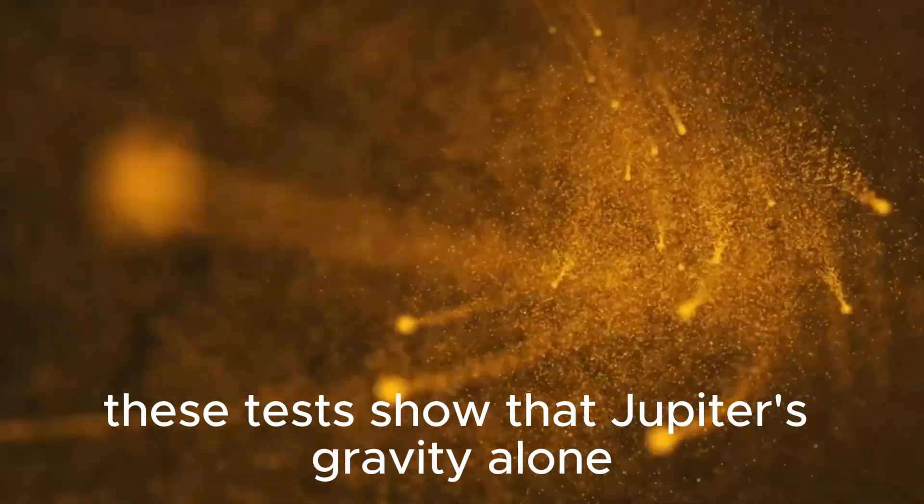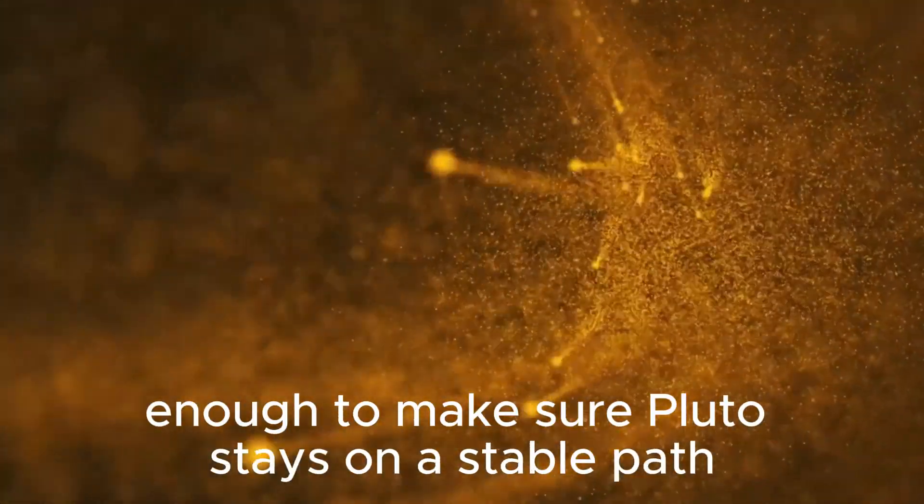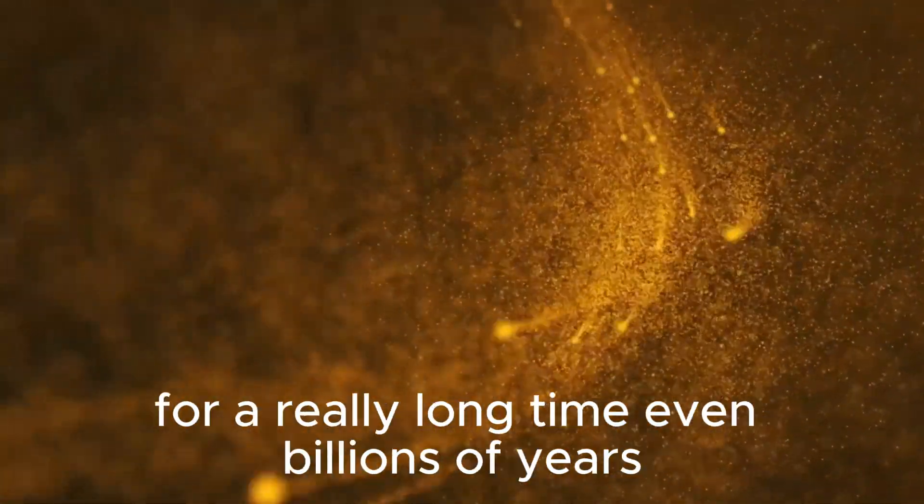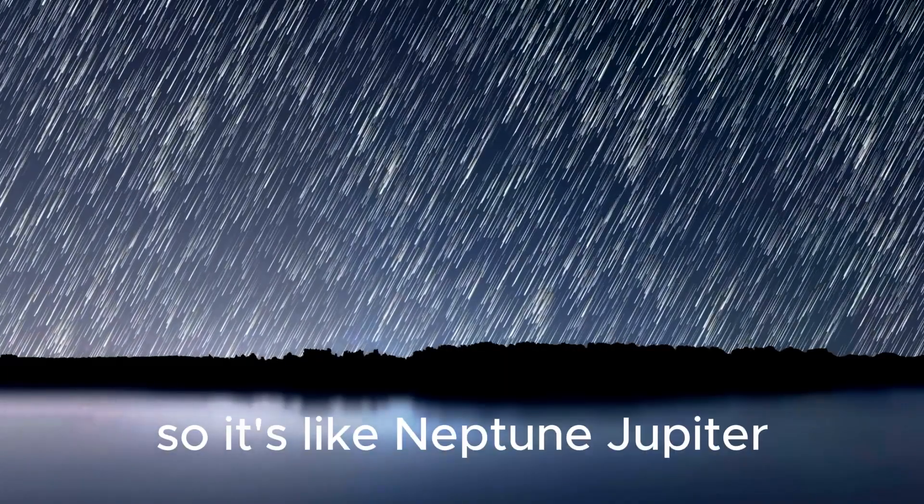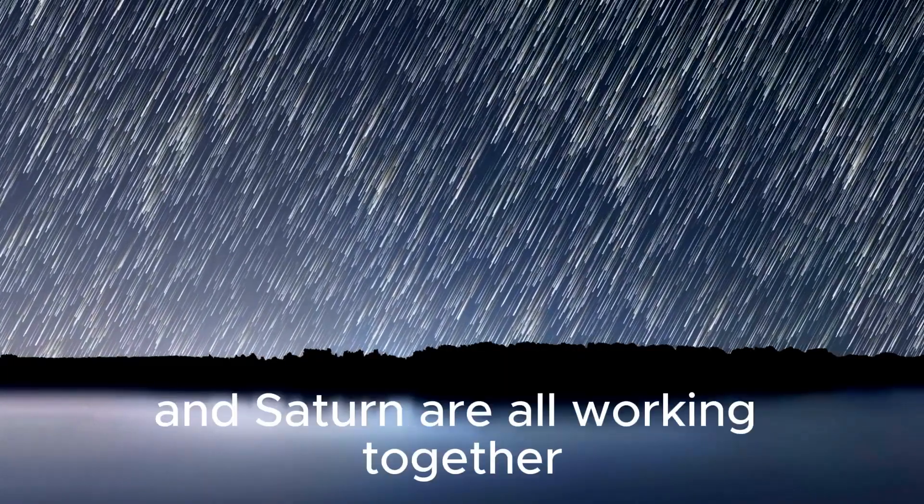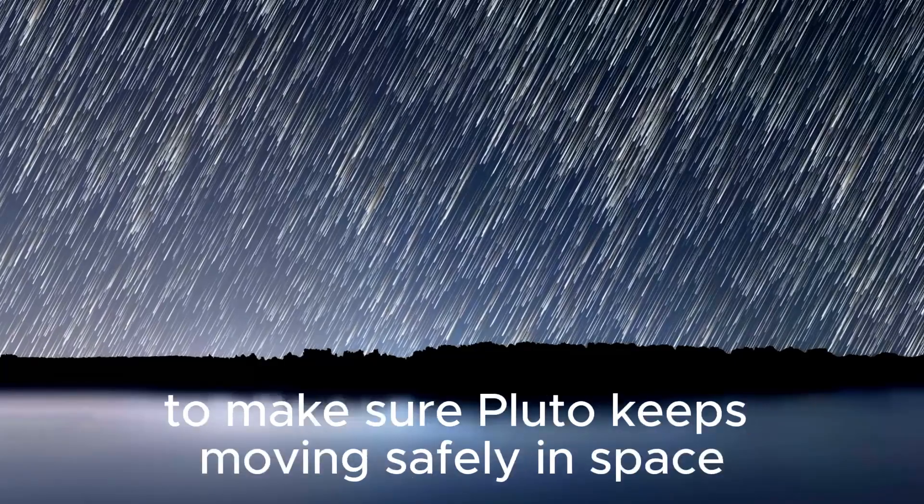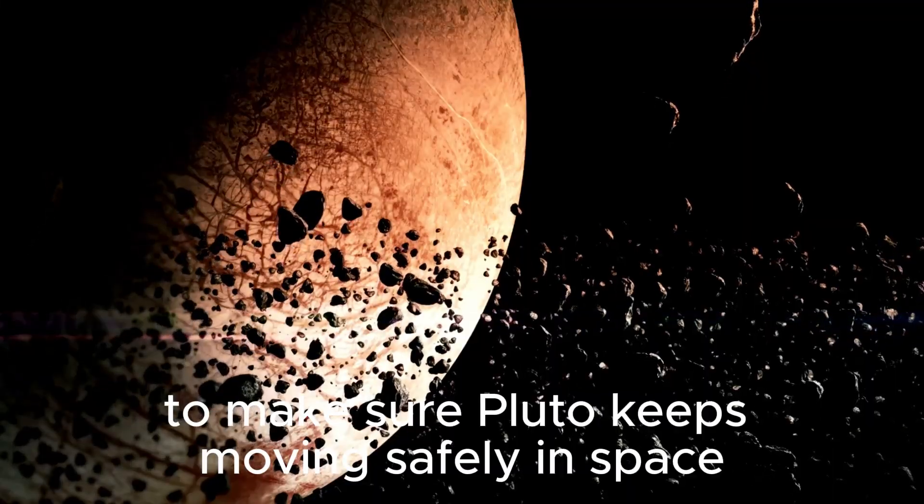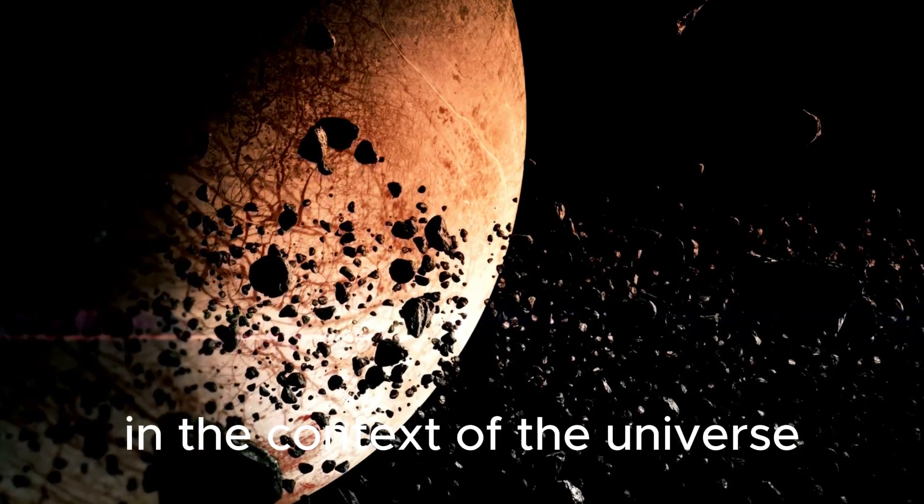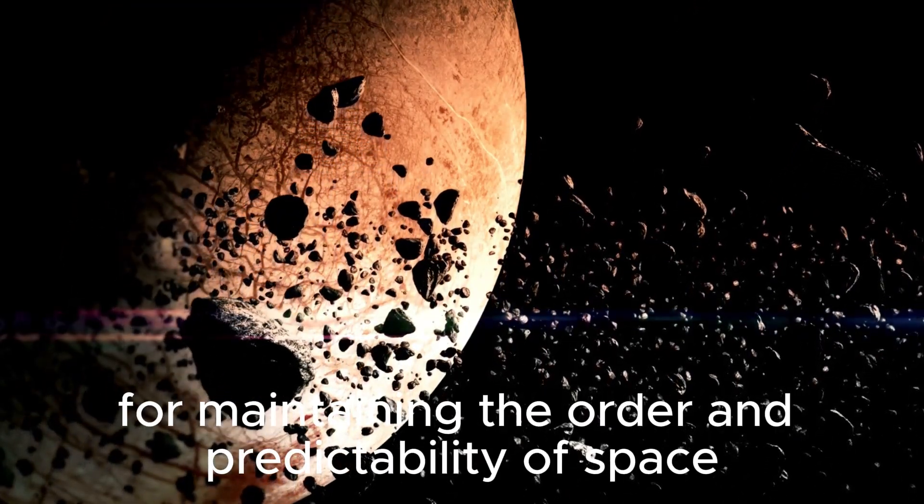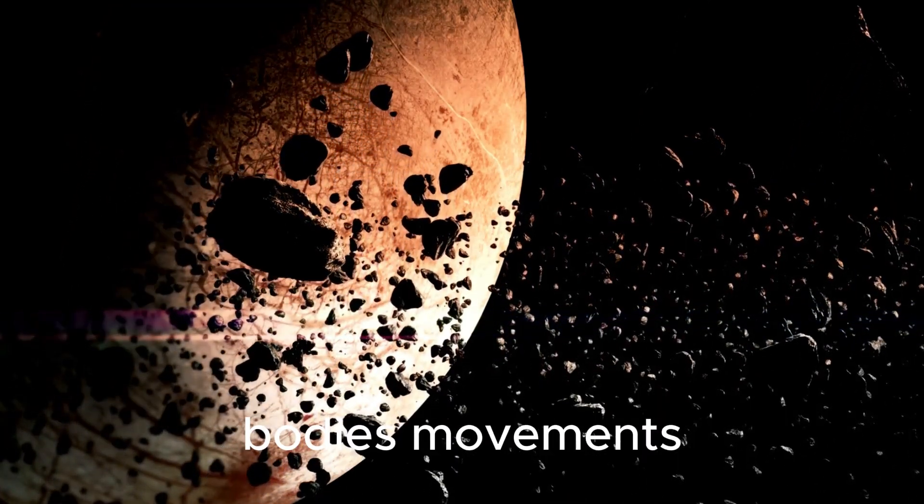These tests show that Jupiter's gravity alone is strong enough to make sure Pluto stays on a stable path for a really long time, even billions of years. So it's like Neptune, Jupiter, and Saturn are all working together to make sure Pluto keeps moving safely in space without running into trouble. These phenomena are essential in the context of the universe for maintaining the order and predictability of space bodies' movements.